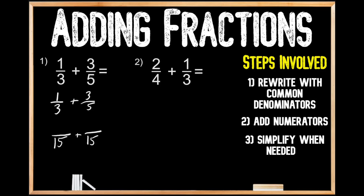We need to make sure that we keep these fractions equivalent, meaning we multiply our numerator by the same value that we multiplied our denominator by to get 15. For our first fraction, we multiplied three times five to get 15, so we do the same to the numerator: one times five gives us five. For our second fraction, we multiplied five times three to get 15, so three times three gives us nine.